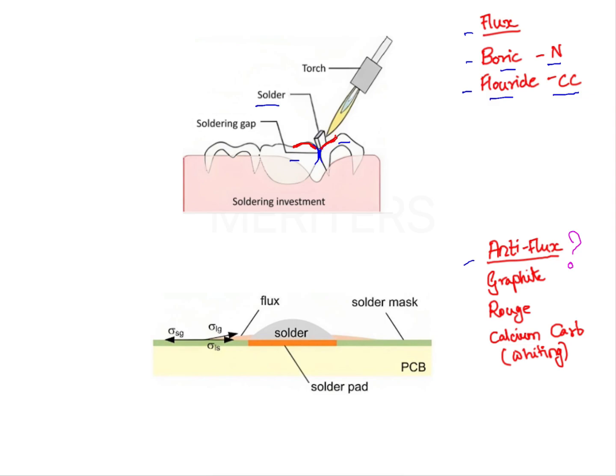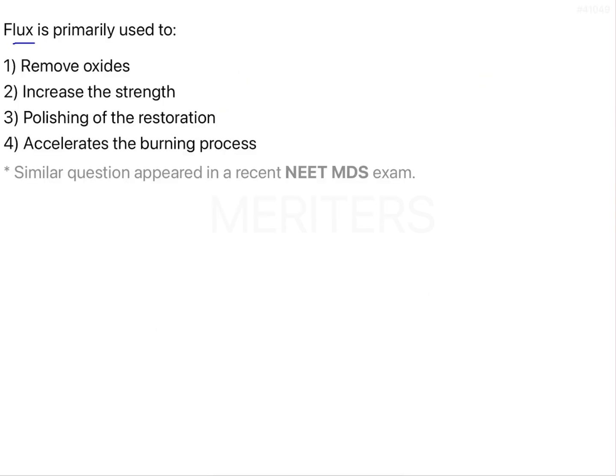Your solder will flow only where you've applied the flux, while in areas where the anti-flux is present, it won't flow. So this is the concept behind flux and anti-flux.